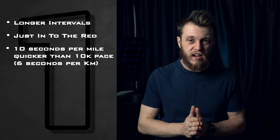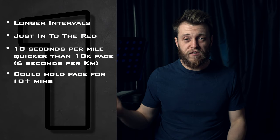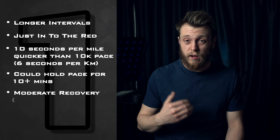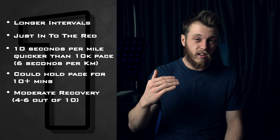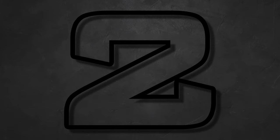Aim one I'm calling just above threshold. These are your longer intervals that aren't max effort, aiming to go just into the red zone. A good pace to pick here is around tempo pace — about 10 seconds per mile quicker than your 10k pace, or six seconds per kilometre faster. This is just enough to push you into the red zone; it's not really horrible and you could sustain it for five to ten minutes, so you could easily do five by five minute repeats. Recovery here could be quite moderate — maybe four to five out of ten for one to two minutes.